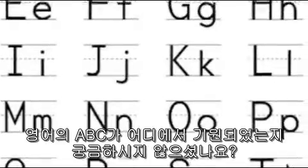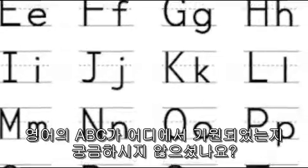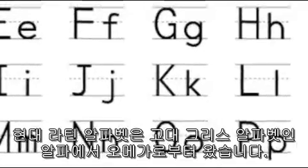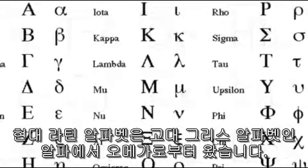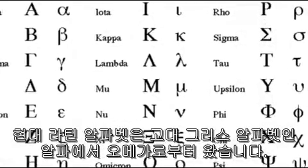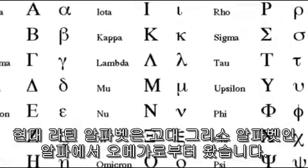Have you ever wondered where the English ABCs come from? Our modern-day Latin alphabet comes from the ancient Greek alphabet, Alpha to Omega.